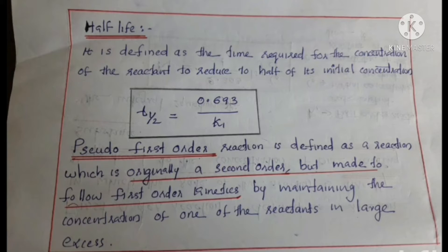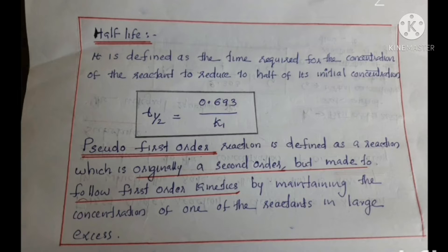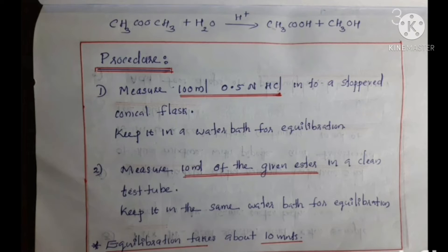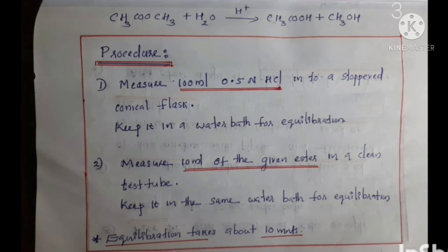Pseudo first order reaction is defined as a reaction which is originally second order, but under certain experimental conditions it is made to behave like first order. For that purpose, we should maintain any one of the reactants in large excess, so that the concentration of that reactant will not change during the reaction and it follows first order kinetics. Acid hydrolysis of an ester is an example of pseudo first order reaction.